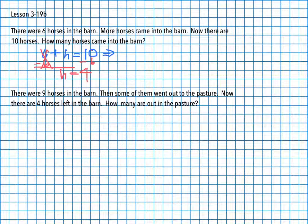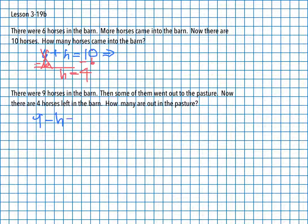There were nine horses in the barn, then some of them went out to pasture. Now there are four horses left in the barn. How many are out in the pasture? Now, again, what we're going to write first is a situation equation. So we start with what it tells us: nine horses, and some of them went out to the pasture — that's our question mark — and now there are four left in the barn. This is our situation equation because it is exactly what the problem says.